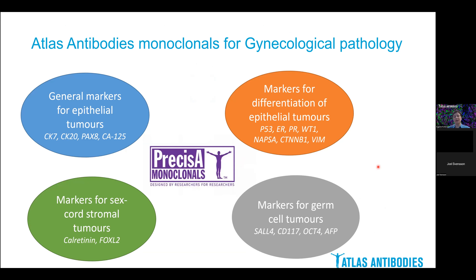Just recently, we released a number of new highly validated monoclonal antibodies for gynecological pathology. These included markers of differentiation of ovarian epithelial tumors, different sex cord stromal tumor markers, and markers for germ cell tumors. In the second part of this talk, we will now discuss how these IHC markers can be of help in gynecological cancer diagnosis and research.